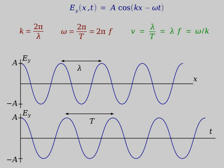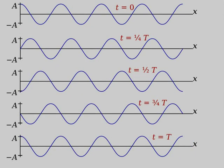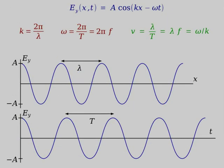The speed of the wave: in time T the wave moves one wavelength, so speed = λ/T = λf. Substituting, speed also equals ω/k. For electromagnetic waves in vacuum (or air, which is close enough), ω/k always equals the speed of light, c = 3 × 10⁸ m/s.